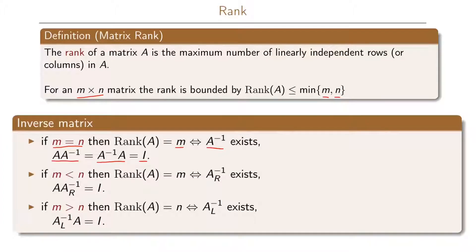We can illustrate this with a square matrix A multiplied by its inverse A to the minus 1, which equals the identity matrix I. For all these matrices the number of rows equals the number of columns, so we have a square identity matrix I.